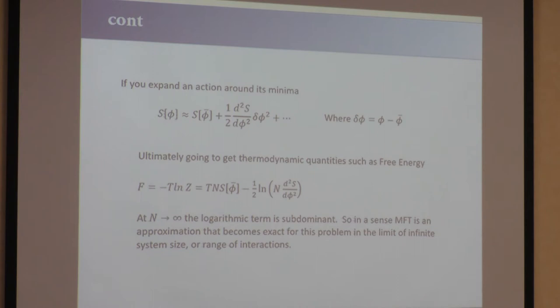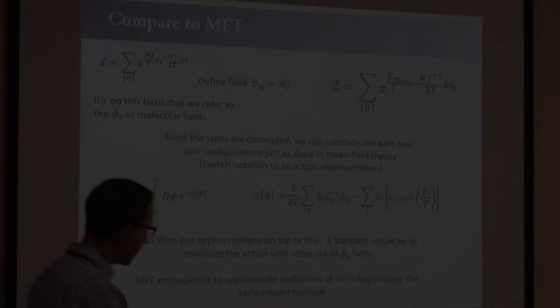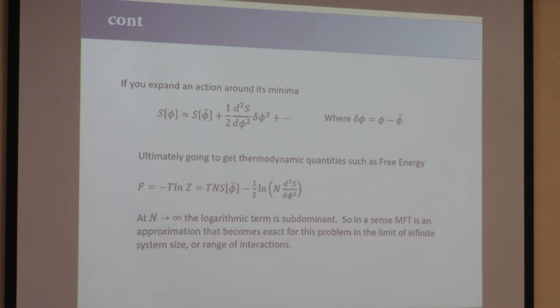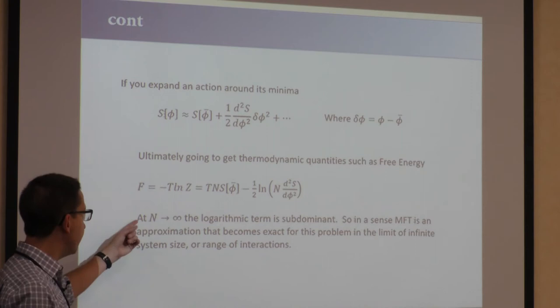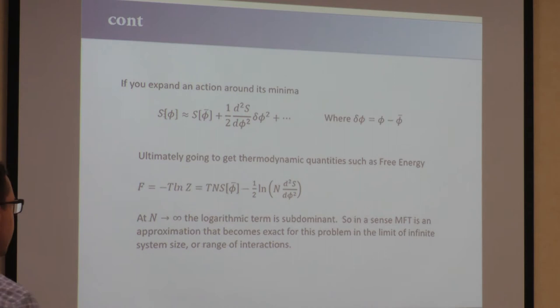If you expand the action around its minima, defining delta phi = phi - phi_min, you can write out a free energy with higher order terms. As n goes to infinity, the logarithmic term is actually subdominant. In a certain sense, mean field theory is an approximation that becomes more and more exact in the limit of infinite system size or range of interactions — which is almost never the case in real systems.